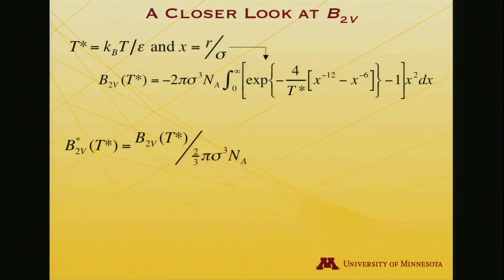You won't look this integral up in a table, it turns out. It needs to be solved numerically, but it can be solved numerically. I want to do one last thing to it though. I want to introduce the other necessary creation of a reduced unit, by getting rid of the other molecularly specific term that still appears. There's still a sigma here, and sigma is substance specific. So let me define B star 2V. It is a function of T star. I will define B₂V star as B₂V divided by 2/3 π σ³ Nₐ.